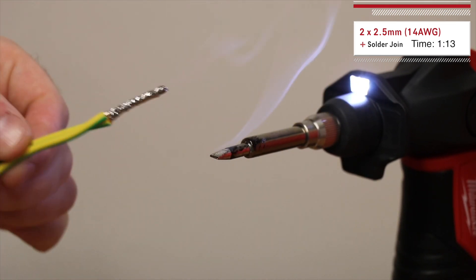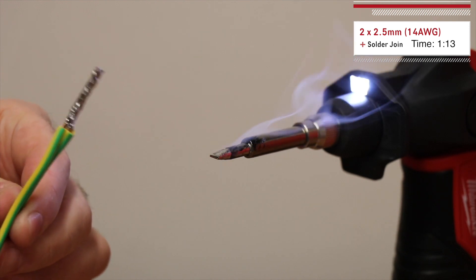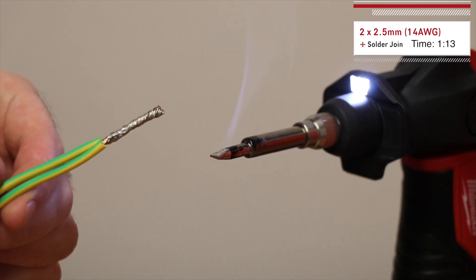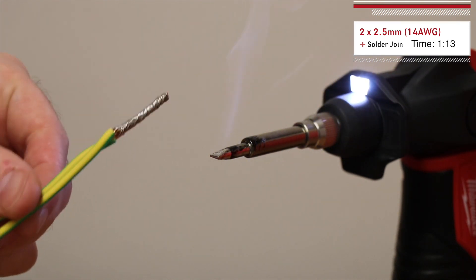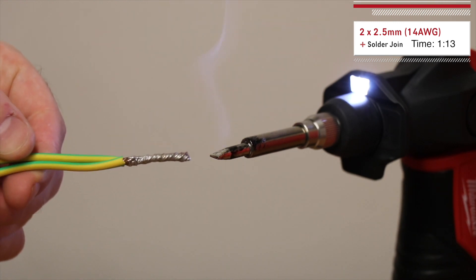If you're soldering this size and smaller cable a lot then I'd have no hesitation in getting one of these. It's doing a good job here. That did a pretty good job of the 2.5mm or 14 AWG. Let's go ahead and try it out on the bigger wire.